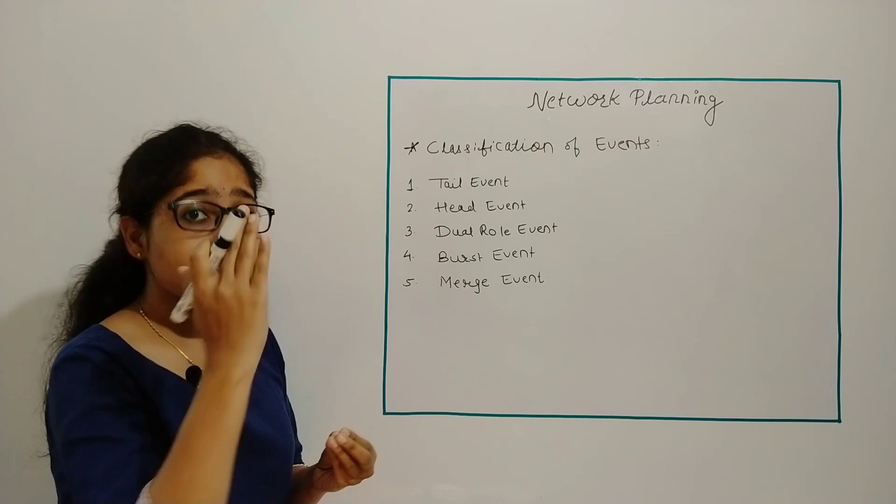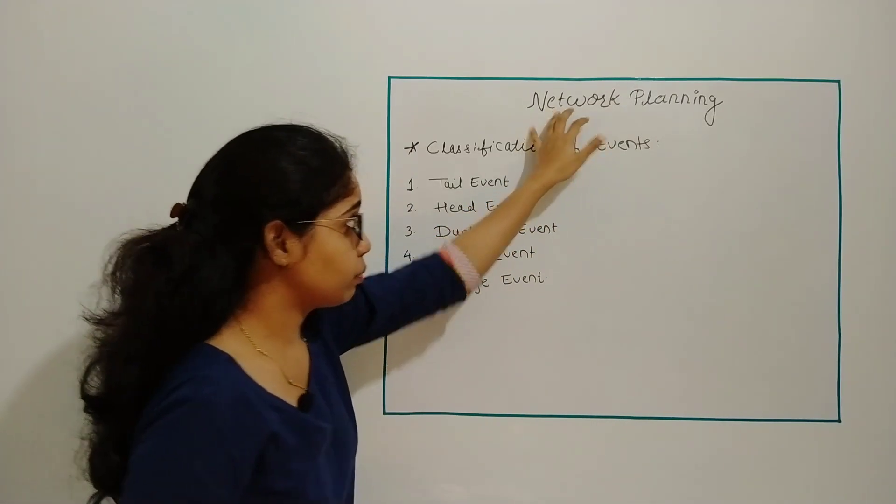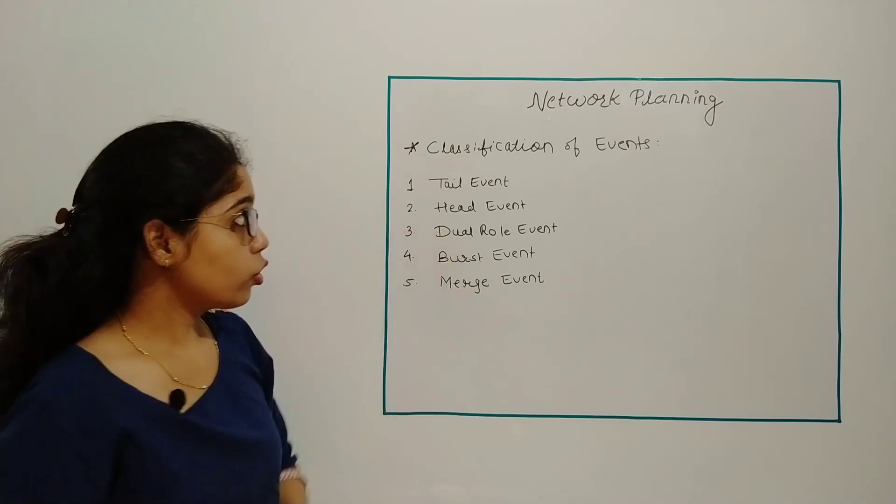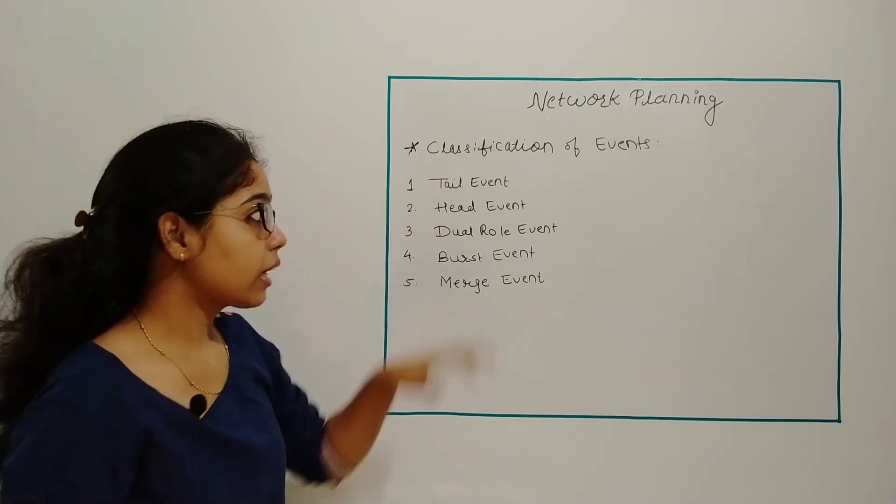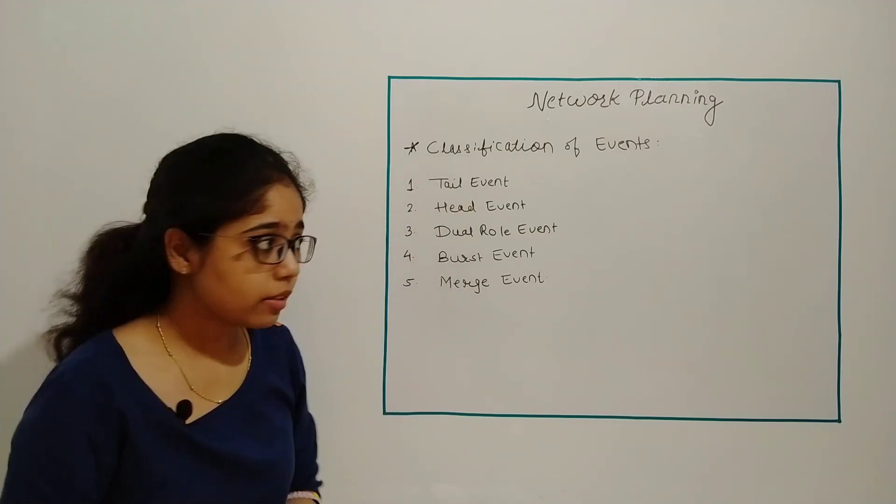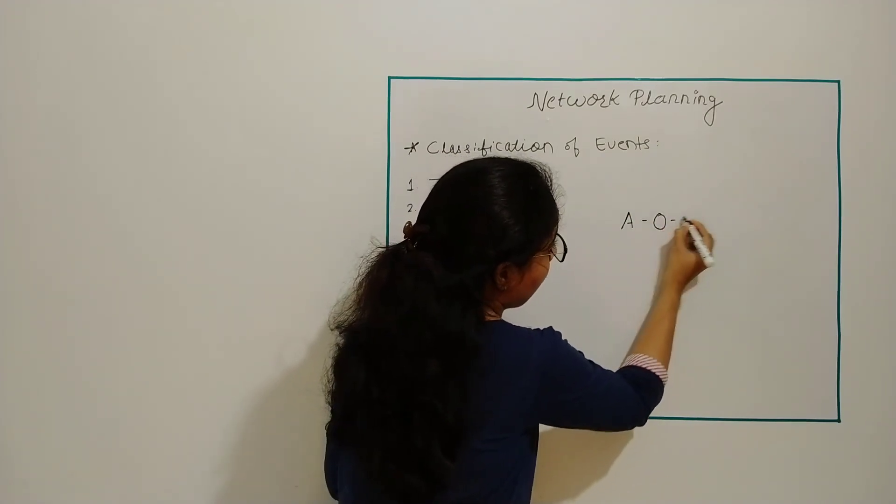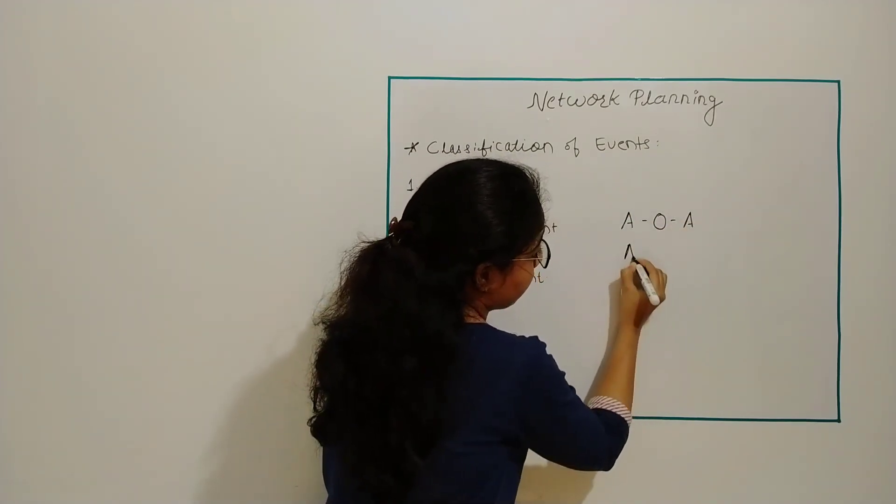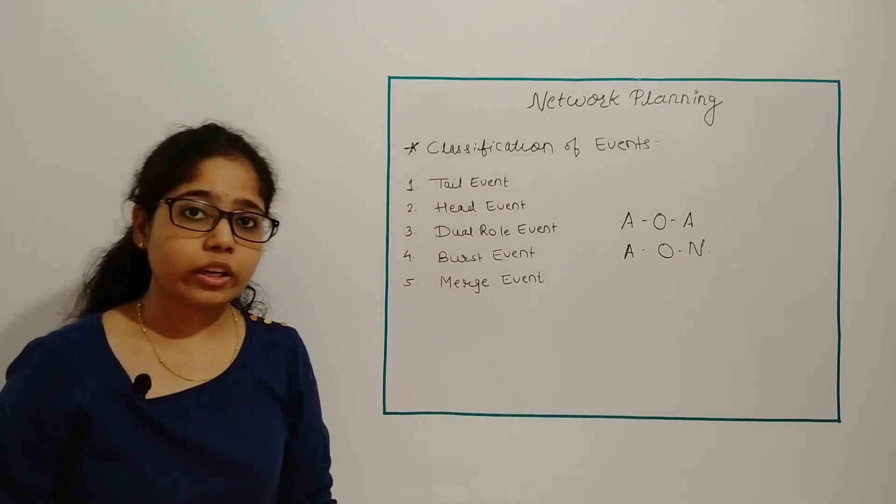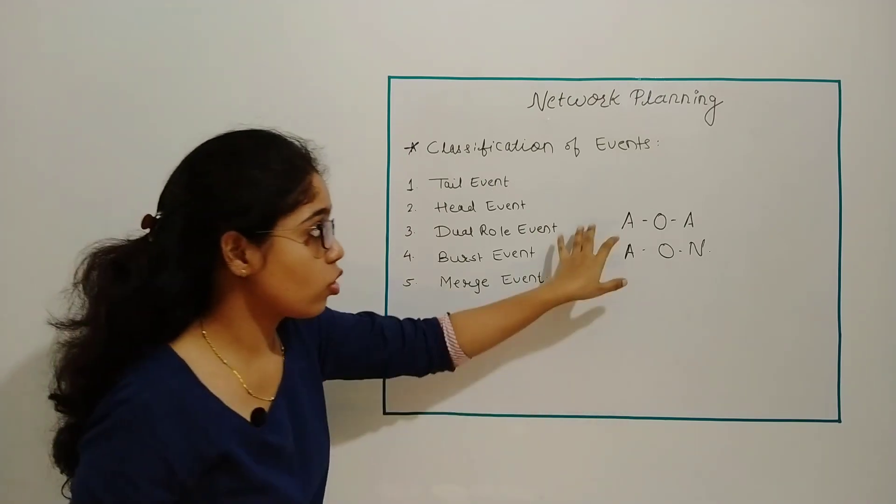Once you're done with network planning, you have to move towards classification of events. Basically there are two types of events: activity on arrow and activity on node. First we will study the classification of events based on activity on arrow.